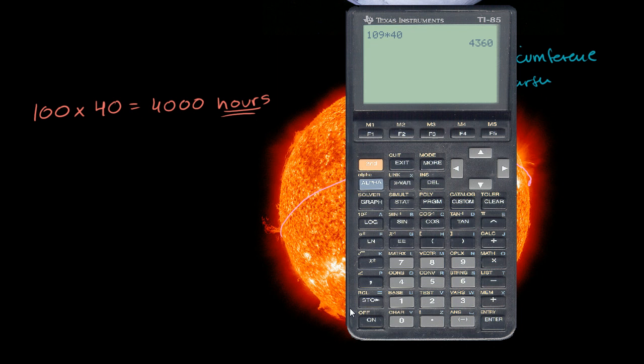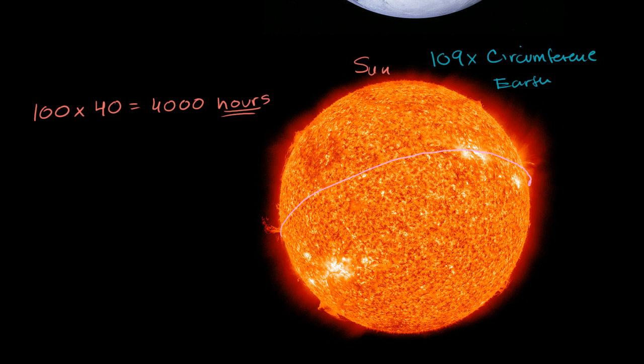So it's 4,360 hours to circumnavigate the Sun, going at the speed of a bullet or a jetliner. And so that is 24 hours of the day. That is 181 days. It would take you roughly half a year to go around the Sun at the speed of a jetliner. Half a year.